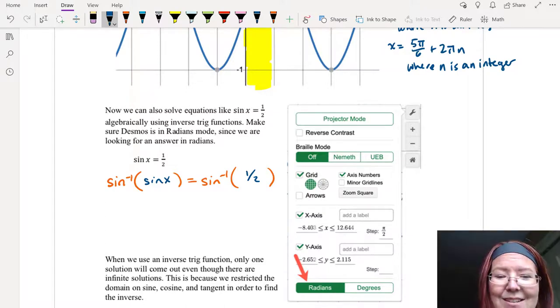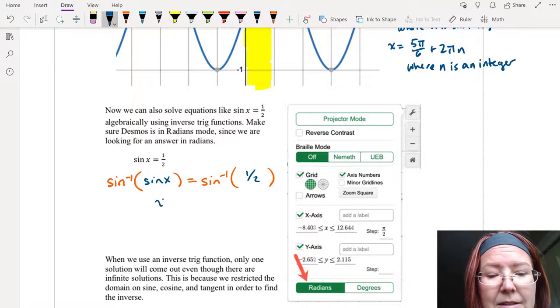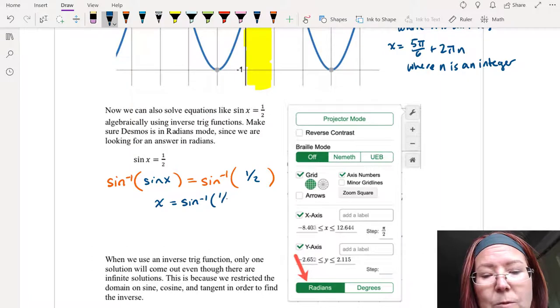So inverse sine of sine x equals inverse sine of 1 half. Now because we have a real inverse function, inverse sine of sine x should just be x, and so we should be able to calculate this by running over to Desmos and finding out what the inverse sine of 1 half is.